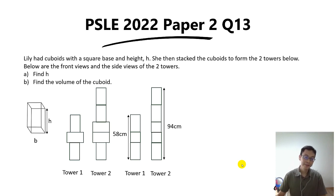Hi everyone, welcome back. In this video we're going to go through PSLE 2022 Paper 2 Question 13, which is the question involving the two towers. Some students call this the Lord of the Rings question because the examiner who set this question must be a fan of Lord of the Rings.